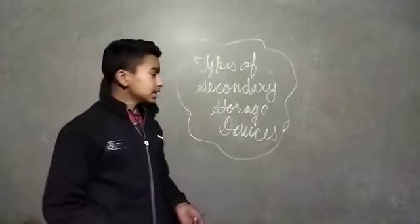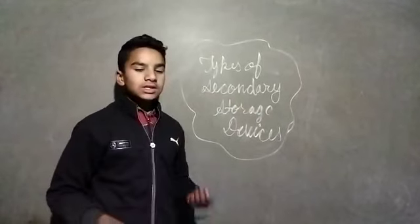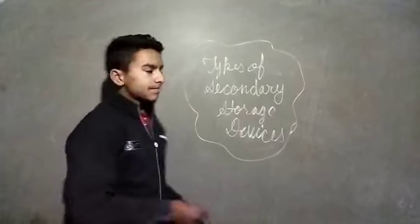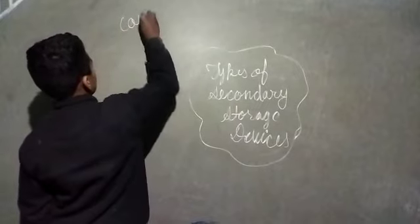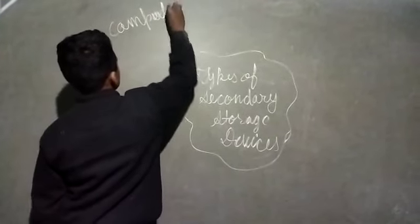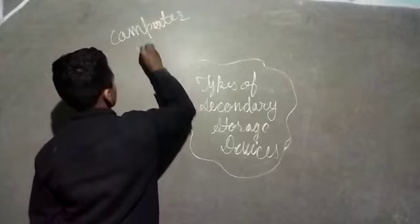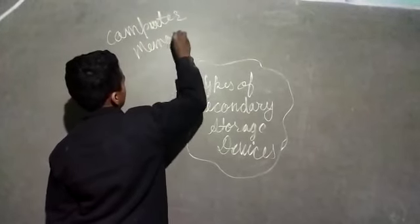So the types of Secondary Storage Devices. First, Computer Memory. C-O-M-P-U-T-E-R Computer, M-E-M-O-R-Y Memory.